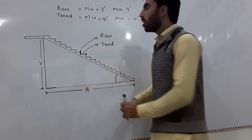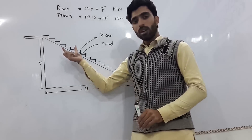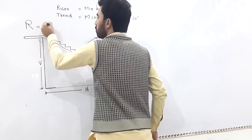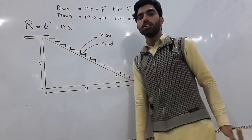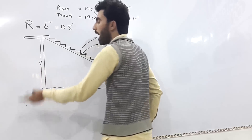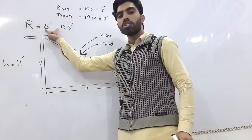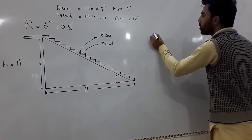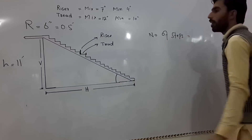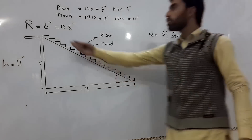If you have the vertical distance for a stair design and need the number of steps, here is the formula. For example, I want to design the riser as six inches, which is equal to 0.5 feet. I need to find out the number of steps. Let's say the height is 11 feet. The formula is: Number of Steps = Height divided by Riser.